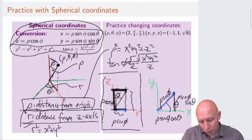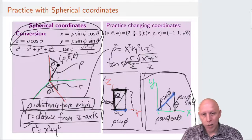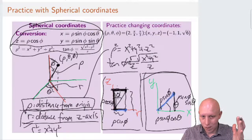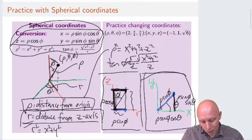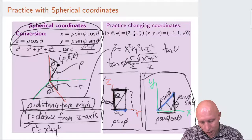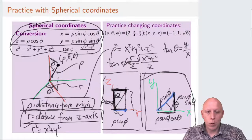And then we can write from the second picture, we can write down theta—the tangent of theta as an opposite over a hypotenuse as well. So we get the tangent of theta is equal to y over x, just like it was in the polar case.